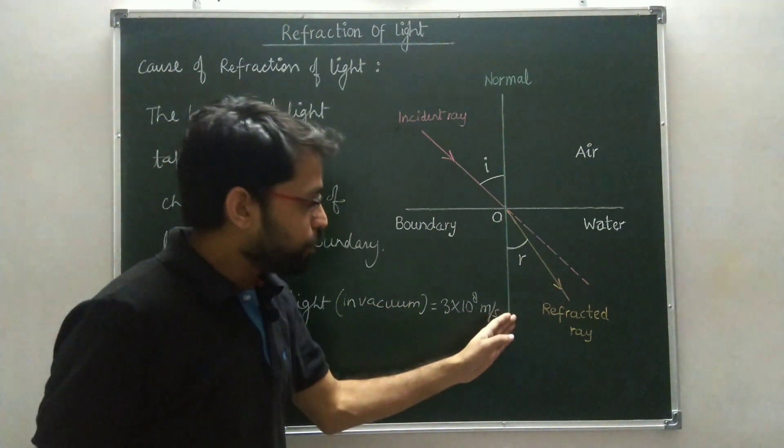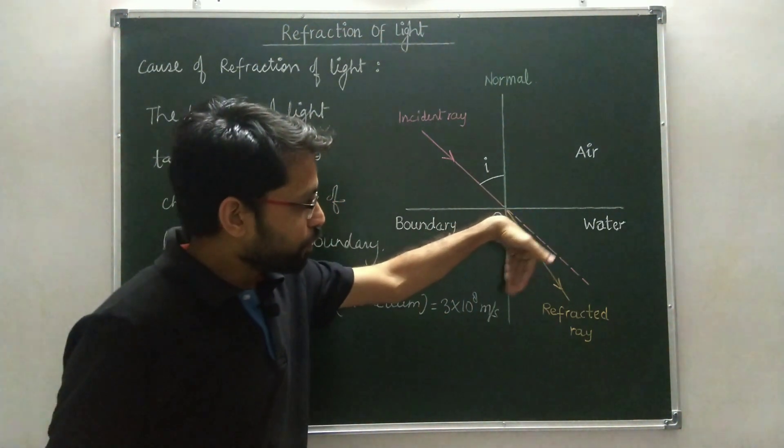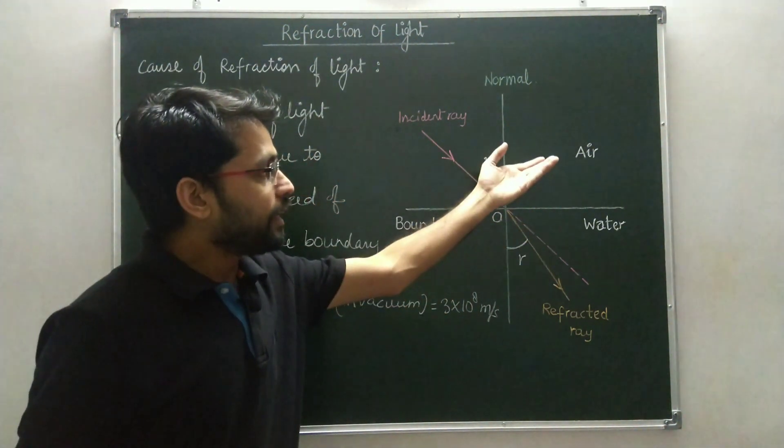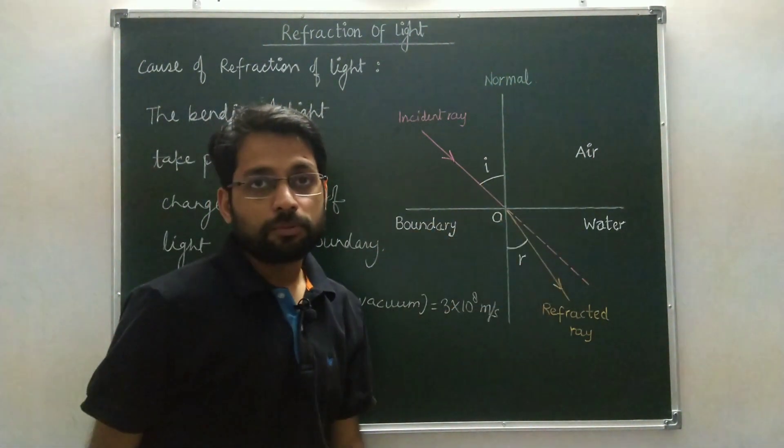The light ray bends towards the normal when the speed of light decreases. When the speed of light increases, it will bend away from the normal.